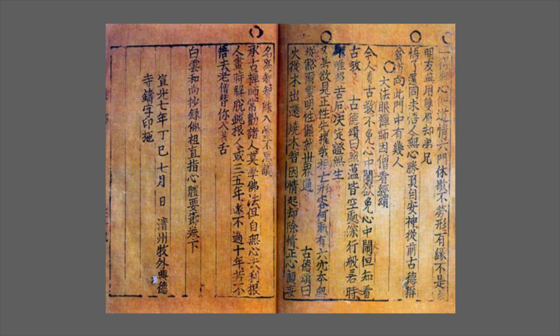Back to the Buddhist context — this example, about 700 years old from Korea, is called the Selected Teachings of Buddhist Sages and Seon Masters. This is the earliest known book that was printed with movable type.